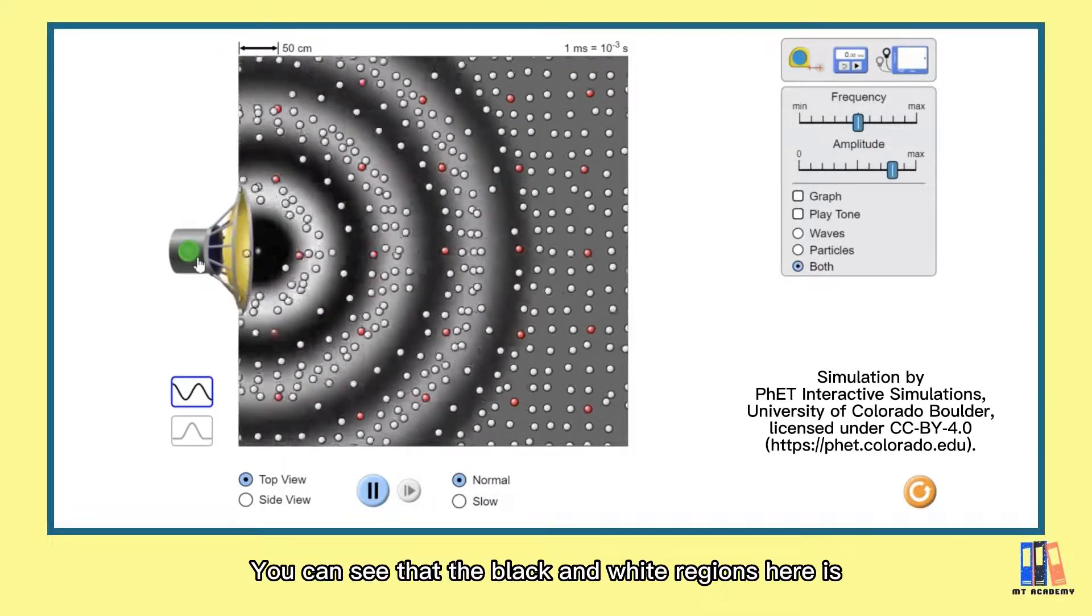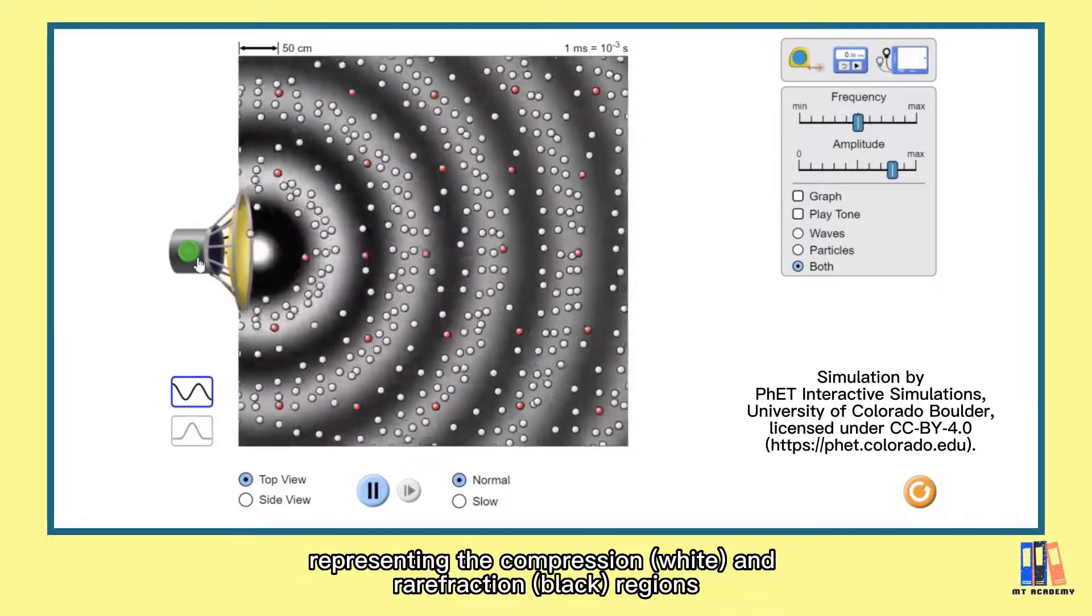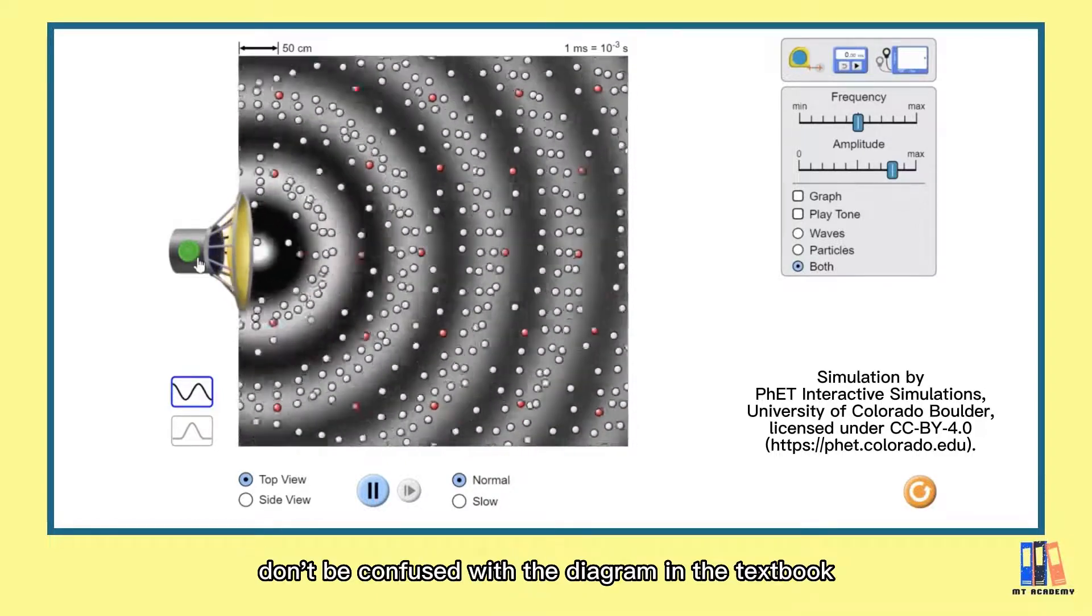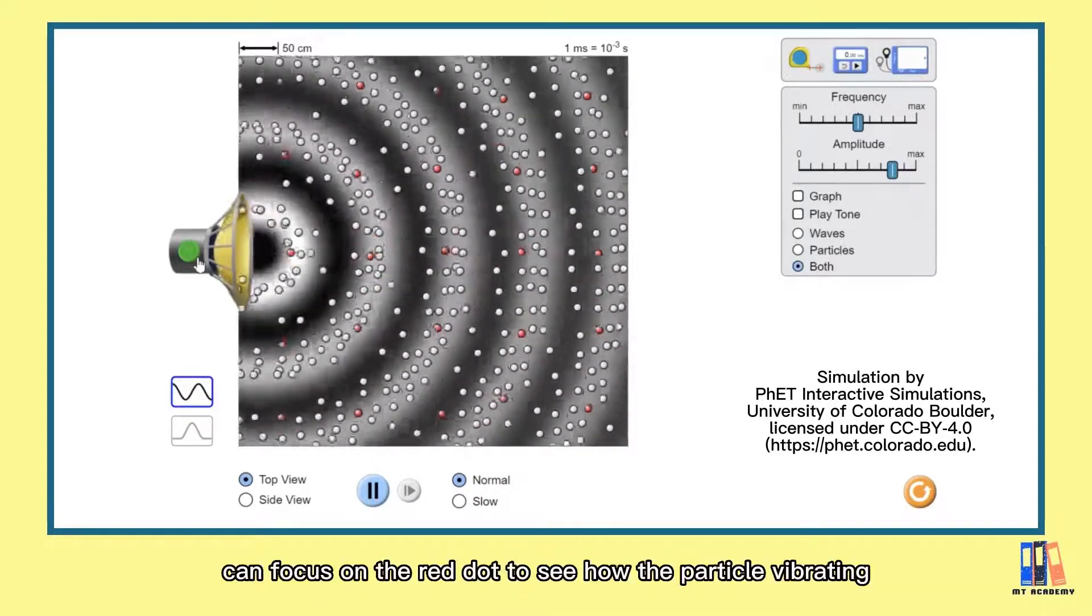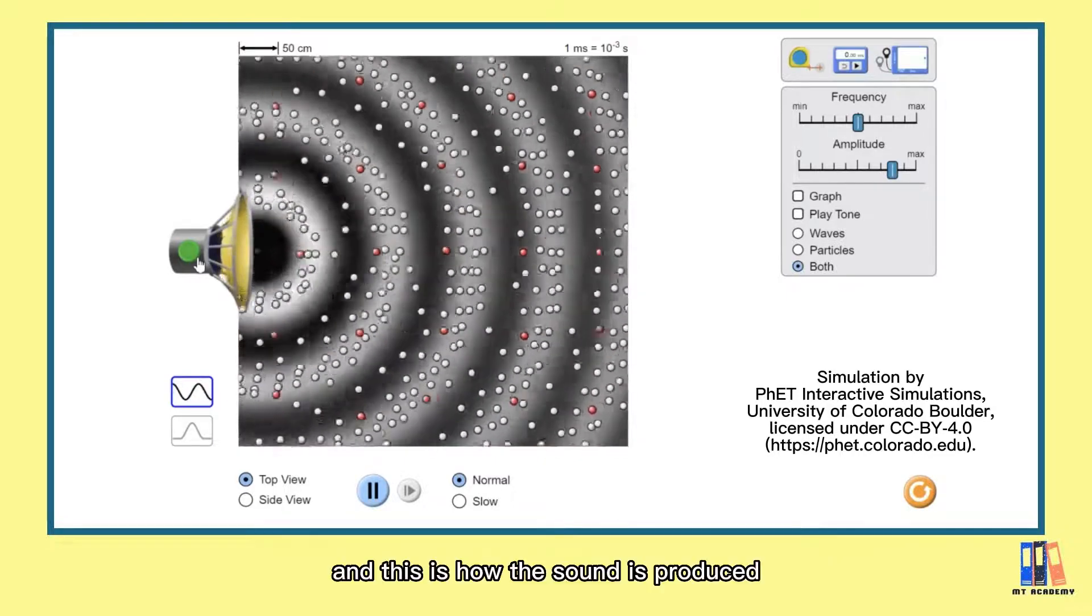So you can see that the black and white region here is representing the compression and rarefaction region. Notice that there are particles concentrated at the white region, so don't be confused with the diagram in the textbook. You also can focus on the red dot to see how the particle vibrating and this is how the sound is produced.